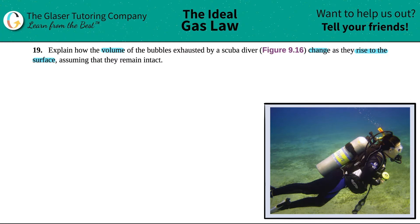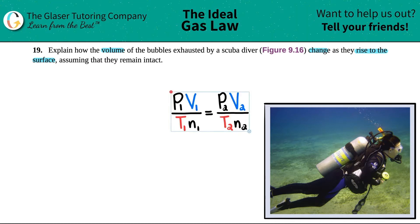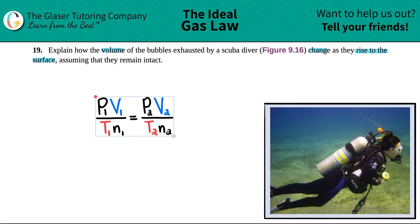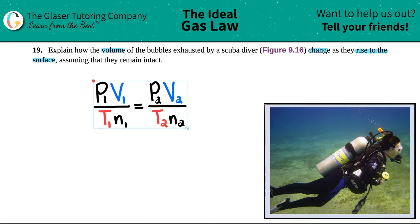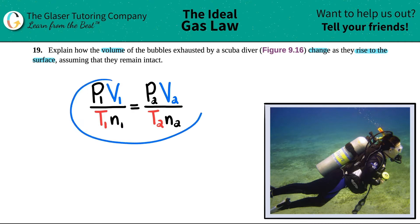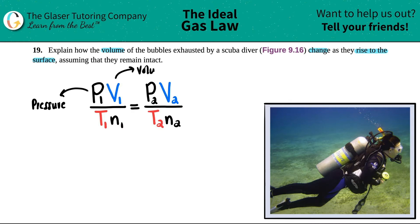The thing we need to know is basically the combined gas law. This is what's going to give us the answer. The combined gas law gives a relationship between four different variables: P stands for pressure, V stands for volume, T stands for temperature, and N stands for the number of moles.